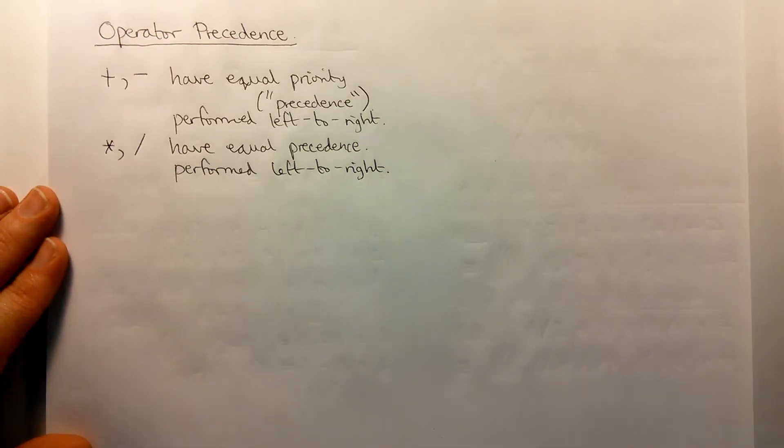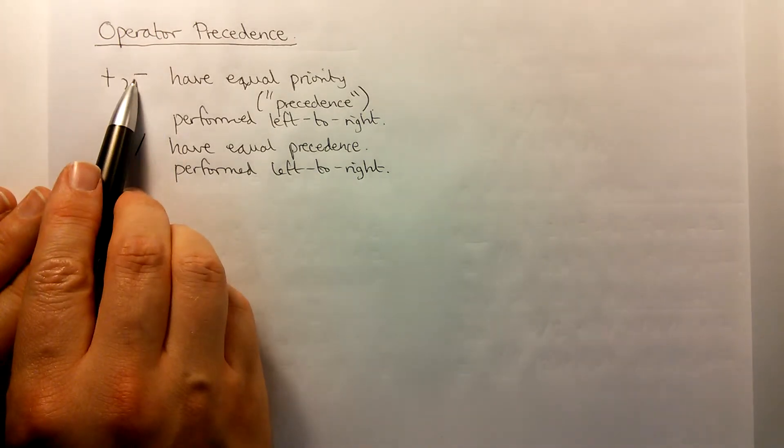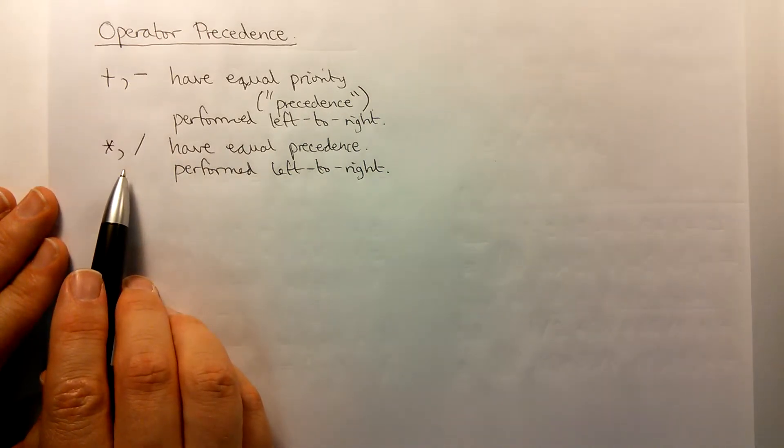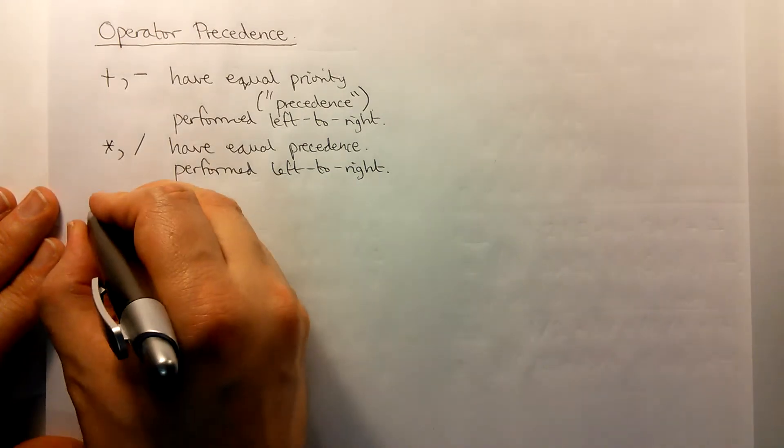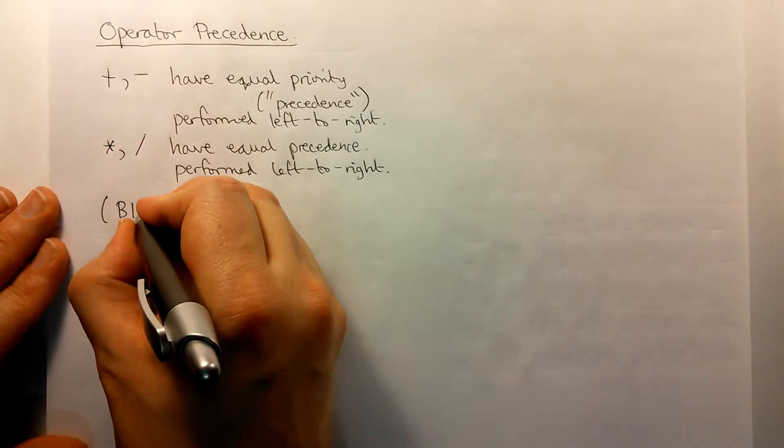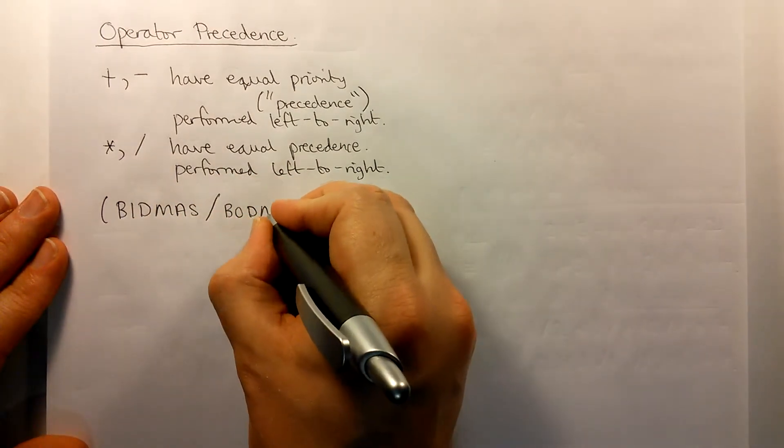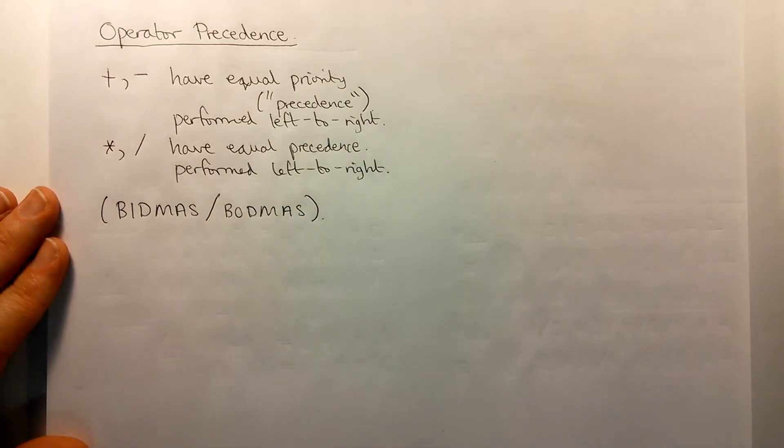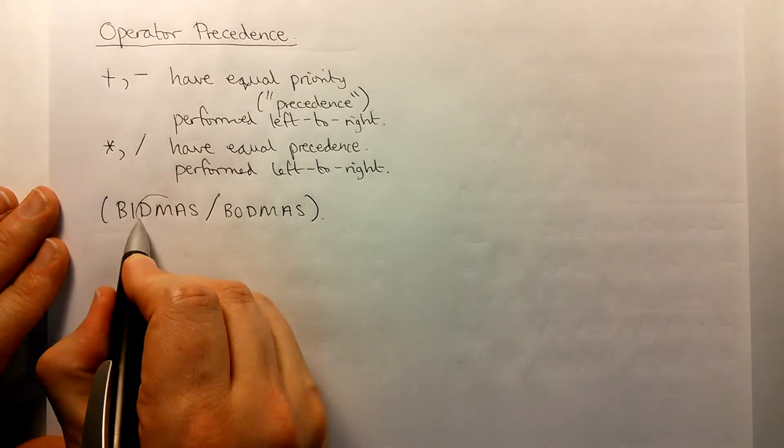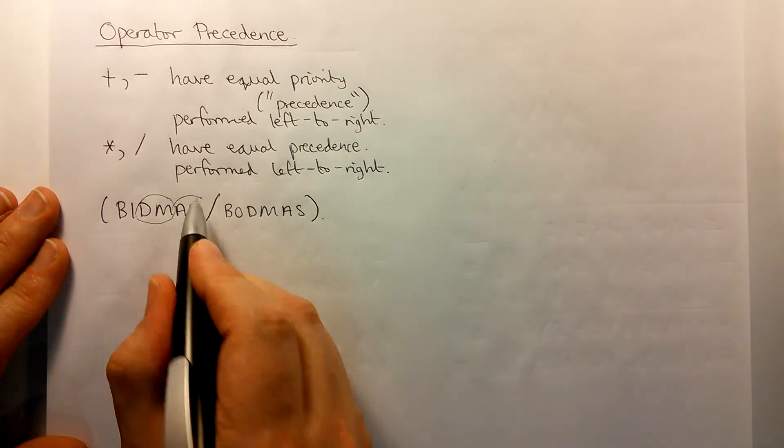But now what happens if we have an expression that involves a mixture of addition, subtraction and multiplication, division? Then the results can matter on the order in which the operations are performed. Now you probably already know the acronym BIDMAS, sometimes called BODMAS. So now we're going to clarify what this acronym means or what part of it means. It means that divide and multiply operations are performed before addition, subtraction operations.